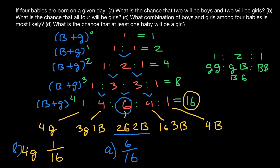For question C — what combination of boys and girls among four babies is most likely? — this is the two-boys-two-girls combination, as it has the highest probability: six out of 16.